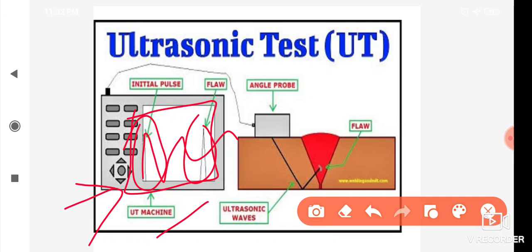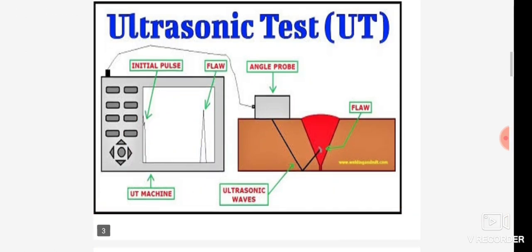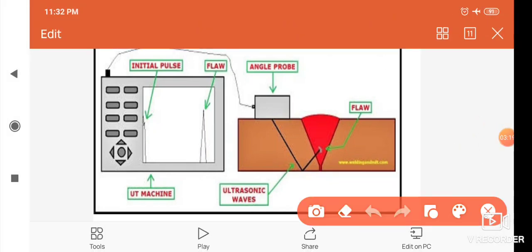Where there is a defect, a high wave or high pulse appears on the screen. The probe is a mechanical testing device used to send the sound waves into the work piece and identify defects based on the pulse pattern displayed.